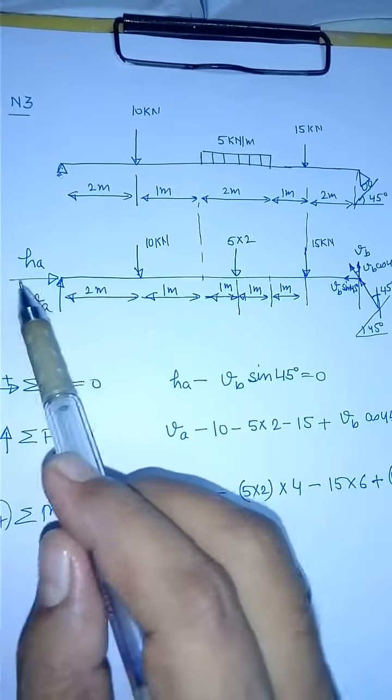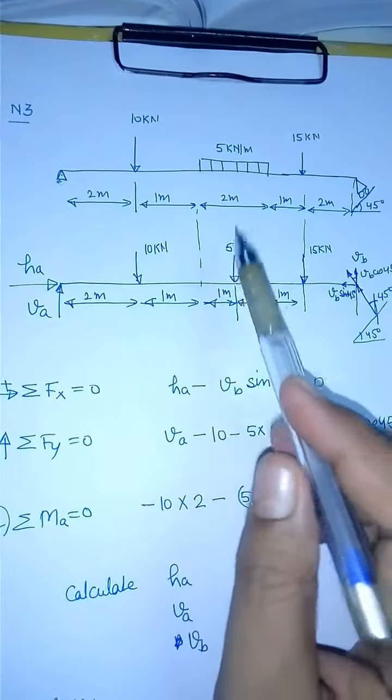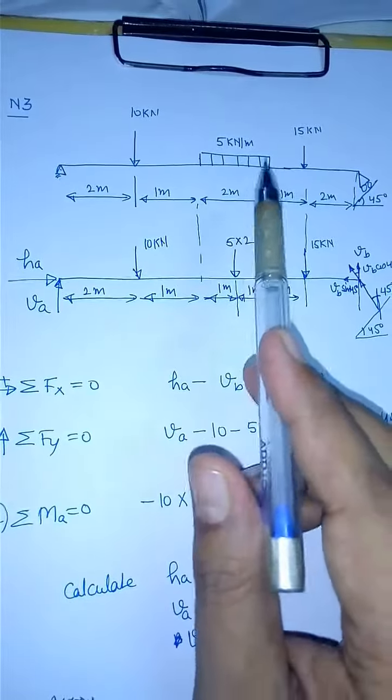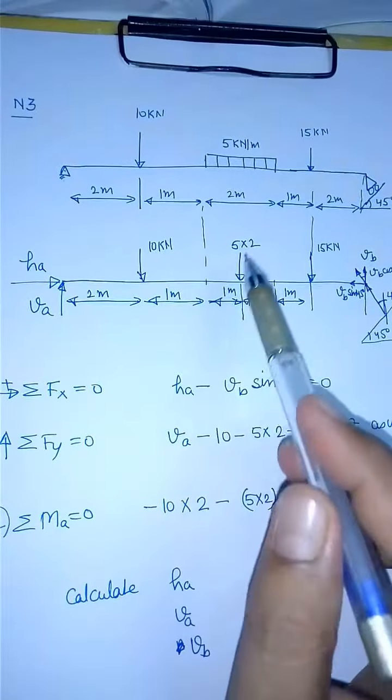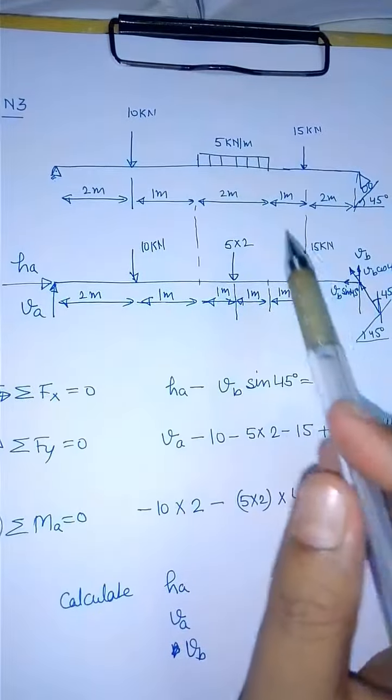We'll take two unknowns here: HA and VA. One is a concentrated force. The UDL is converted into a concentrated force: 5 into 2 acting at the center of 2, that is one meter from here and one meter from here, giving a 15 kilonewton force downward.